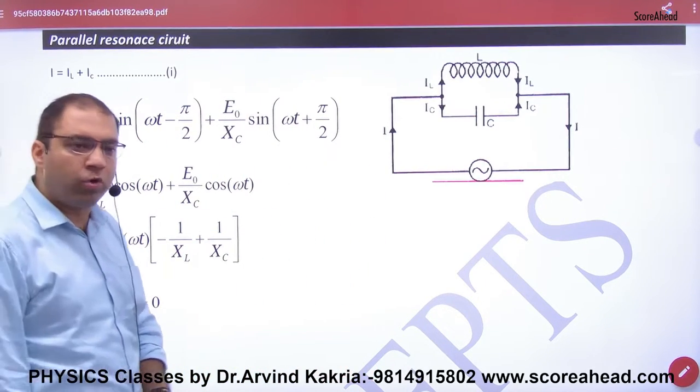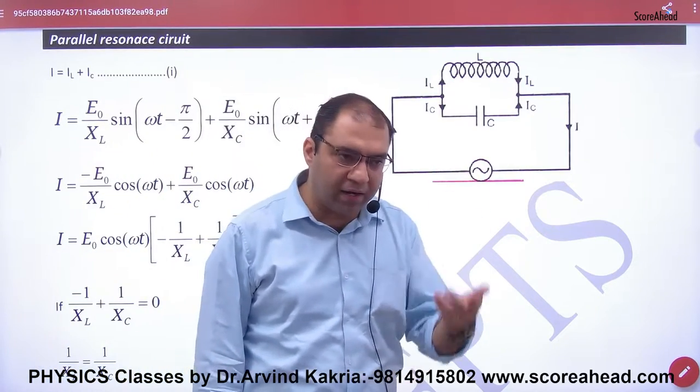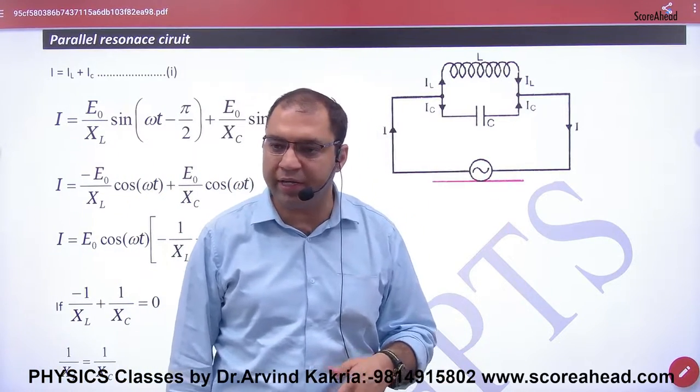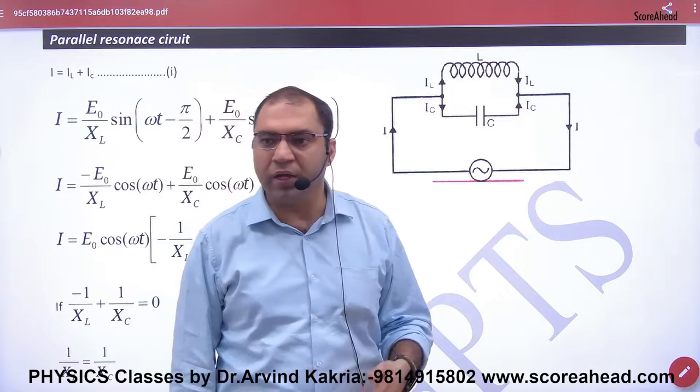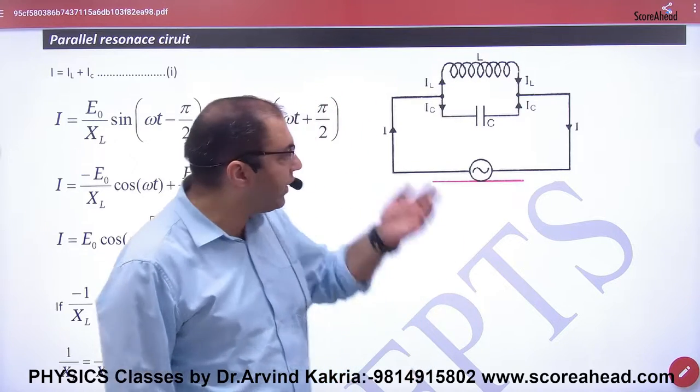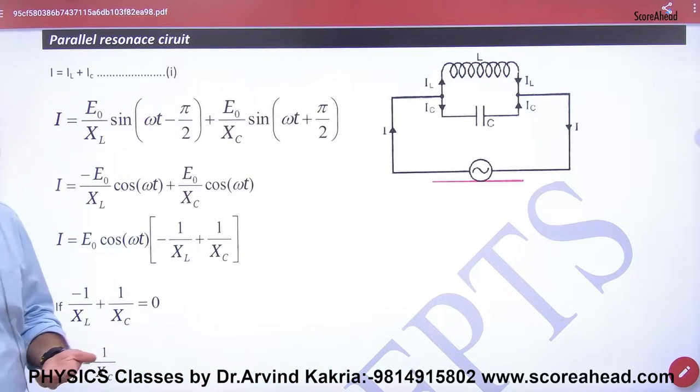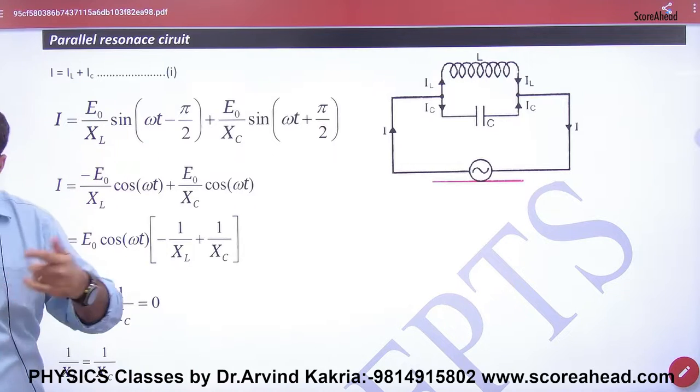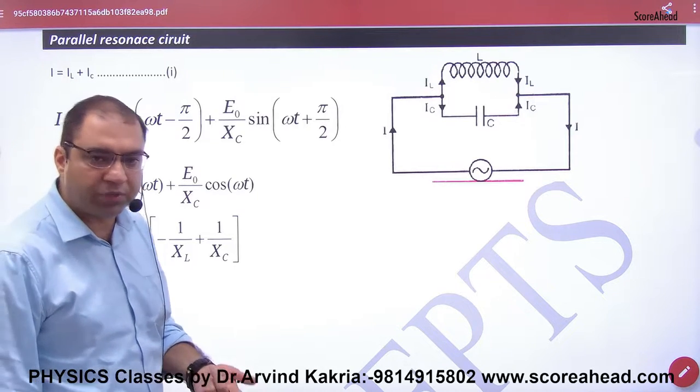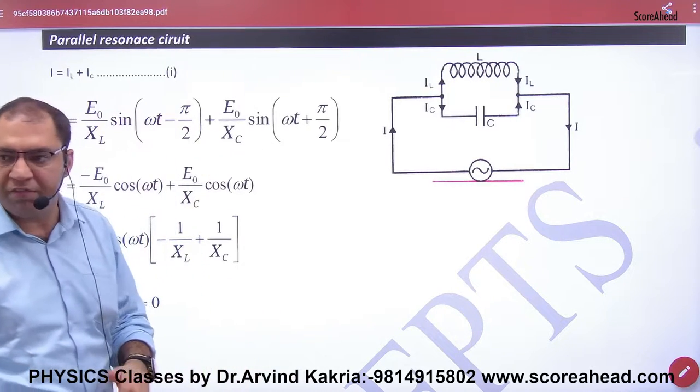Now EMF is the same because both are connected in parallel, and EMF is equal to E₀sin(ωt). So if E = E₀sin(ωt), the current in the inductor is I₀sin(ωt - π/2), because the current in the inductor, the EMF is back by an angle of π/2.